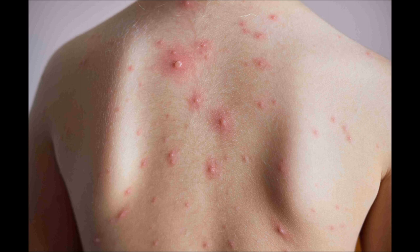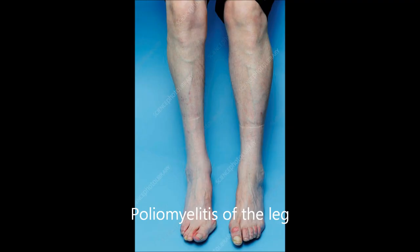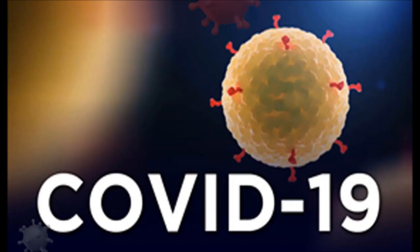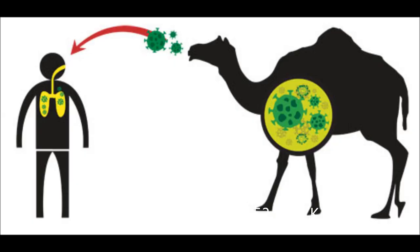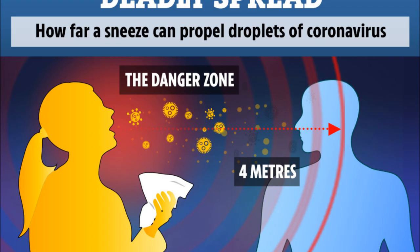They cause diseases like measles, chicken pox, polio, AIDS, influenza, etc. Nowadays, you are aware of COVID-19, which is caused by a novel coronavirus. Coronavirus is zoonotic, meaning it is transmitted between animals and human beings. It generally attacks the respiratory system. COVID-19 spreads through close physical contact or through the respiratory droplets released by an infected person.